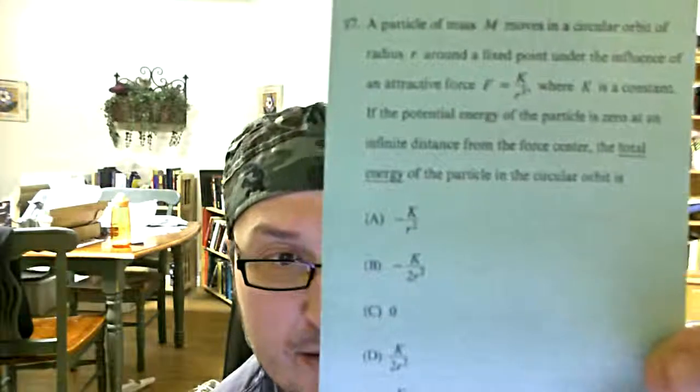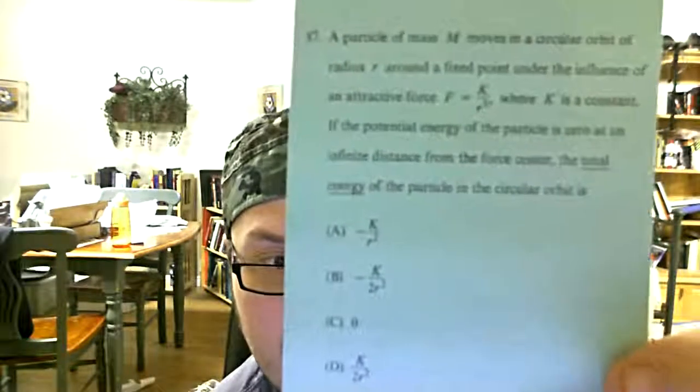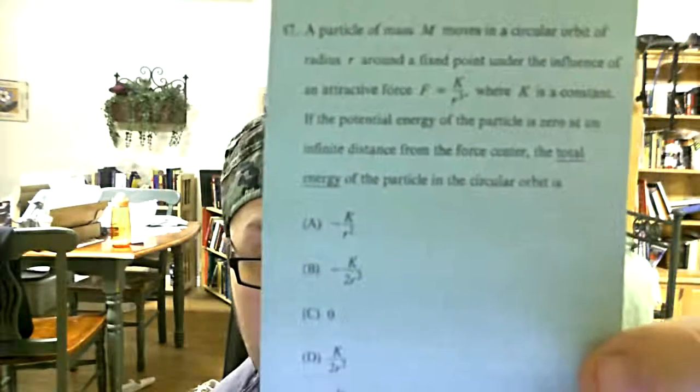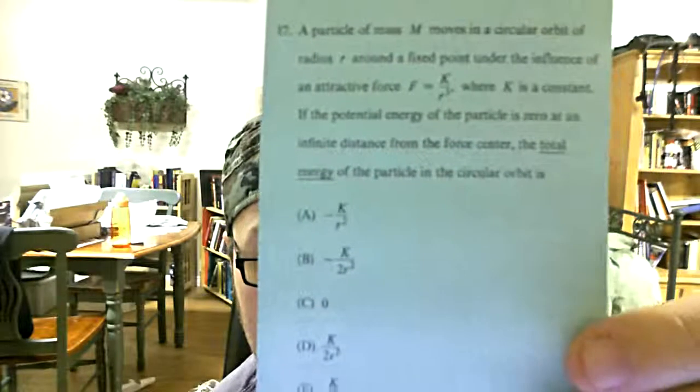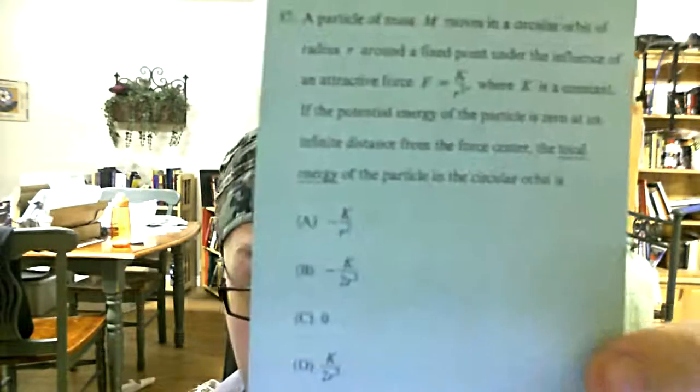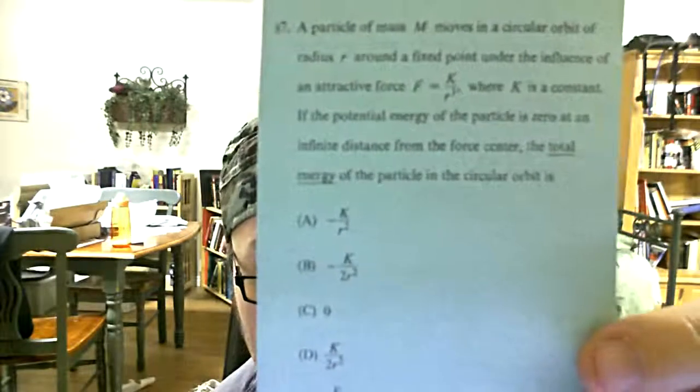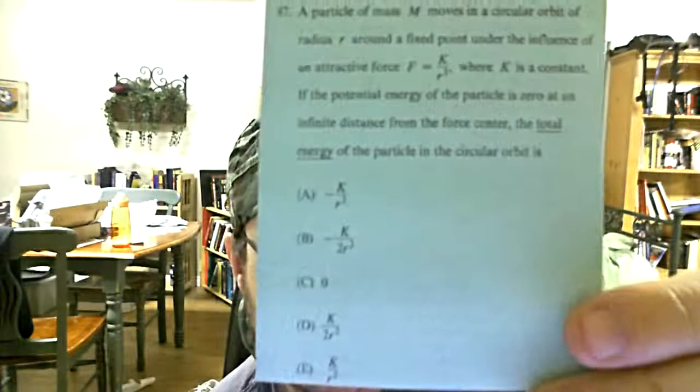Number 87: A particle of mass m moves in a circular orbit of radius r around a fixed point under the influence of an attractive force, f equals k over r cubed, where k is a constant. If the potential energy of the particle is zero at an infinite distance from the force center, the total energy of the particle in the circular orbit is.